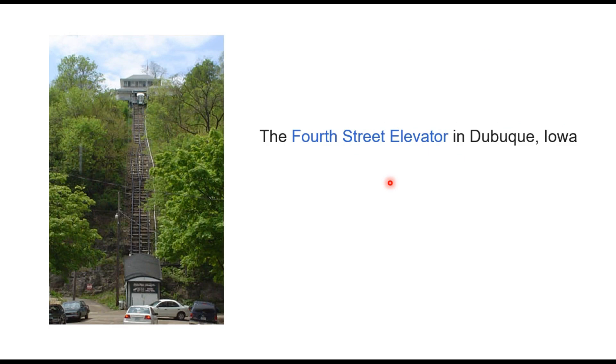This is the Fourth Street elevator in Iowa. And you can just see the slope. Now here also the principle is the same: you have two cars and these two cars cross here at the loop.